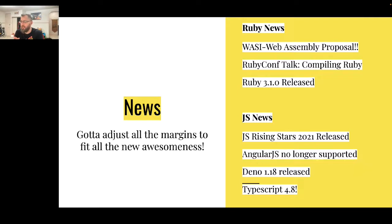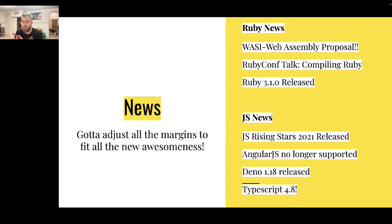As far as JavaScript goes, the big news is that AngularJS is now no longer supported by Google — they are forcing you to use Angular now, so they've deprecated their older version. There was also JavaScript Rising Stars 2021 — all the interesting projects that came out in the last year, a great collection to look at. Deno version 1.18 was released — we've had some talks on Deno in the past, check out YouTube for those. And of course we have a new version of TypeScript. It wouldn't be a JavaScript meetup if I didn't talk about TypeScript and how you should be using it, because it is the future of the internet.